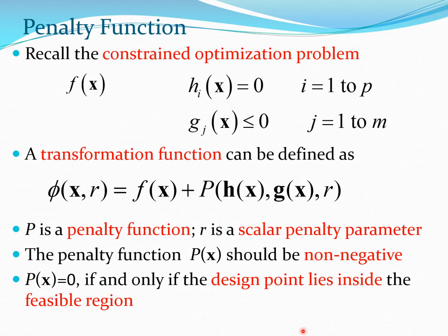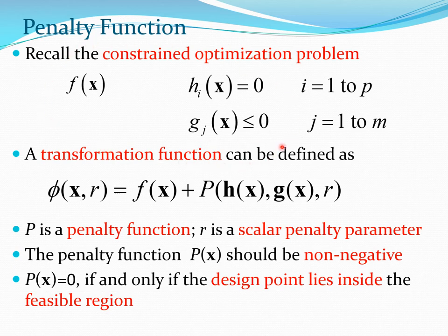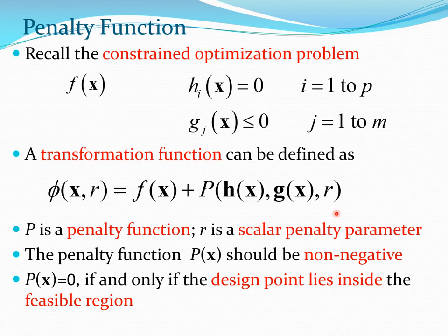Now let us give the problem a more quantitative feel. The constrained optimization problem is: minimize f(x) subject to h(x) = 0 and g(x) ≤ 0. We create a transformation function phi, which is a function of x and r, combining f(x), h(x), and g(x). Here r is a scalar penalty parameter — it can be 1, 10, 1000, 10000 and so on — and P is a penalty function.